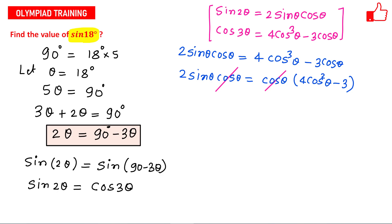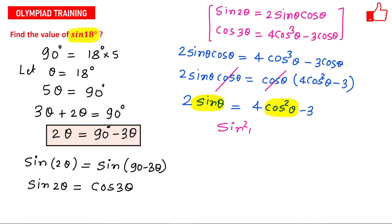After cancelling cos θ, we have 2 sin θ = 4cos²θ − 3. Here we have sin θ on the left and cos²θ on the right. We can convert cos²θ using the Pythagorean identity sin²θ + cos²θ = 1, which gives cos²θ = 1 − sin²θ.